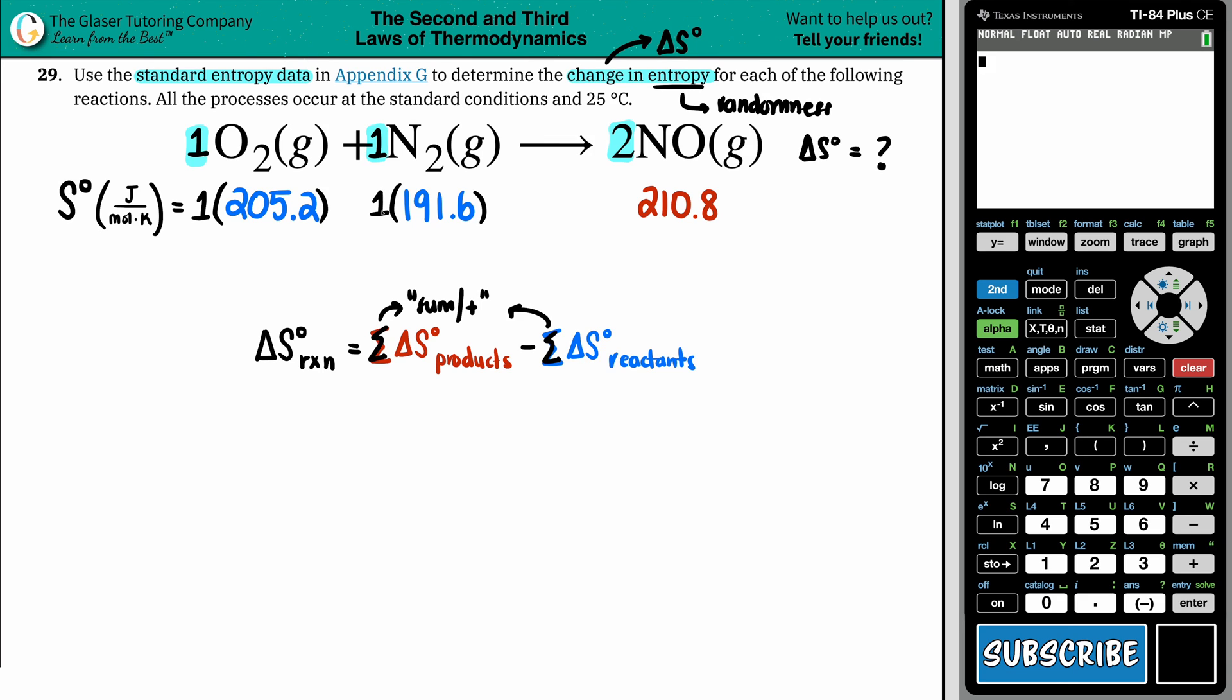Coming over to NO, now since you have two of these, I have to times these by 2, the 210.8 times by 2, because each one of these numbers is only for one mole. So whatever number that you have on your balanced equation, that's the number, the coefficient that you have to multiply it by.